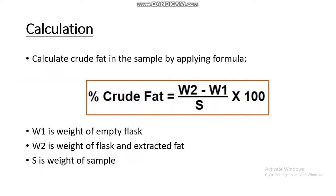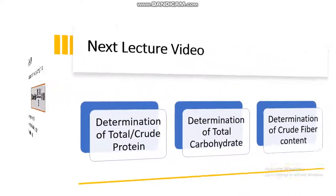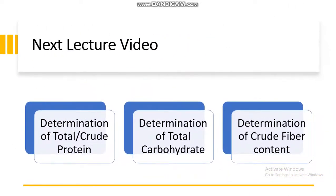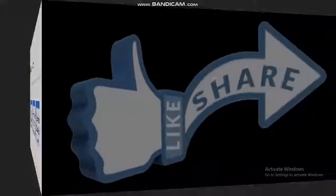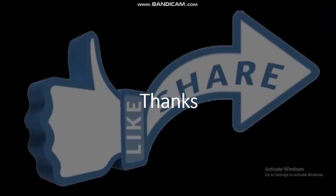For calculation of crude fat in the sample, use the following formula: W1 is the weight of the empty flask, W2 is the weight of the flask with extracted fat, and S is the weight of the sample. In the next lecture, we will study determination of total or crude protein, total carbohydrate, and crude fiber content. Thanks for watching.